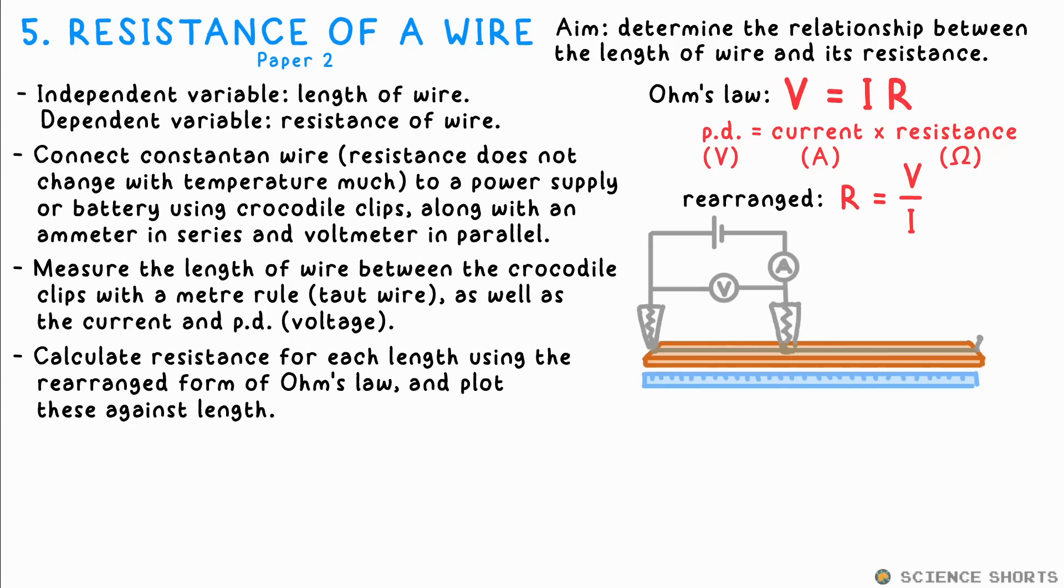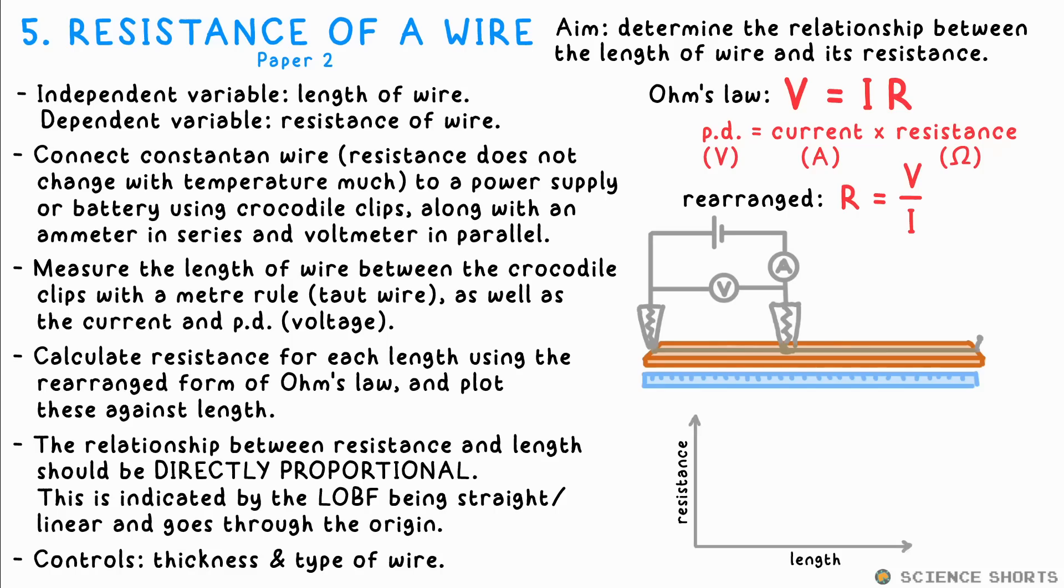Calculate resistance for each length by rearranging Ohm's law. Resistance is equal to voltage PD divided by current. Plot resistance against length and you should end up with a directly proportional relationship. That is a straight line that goes through the origin if you extrapolate the line of best fit.